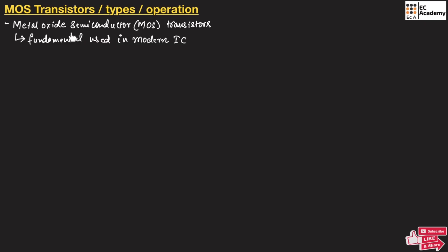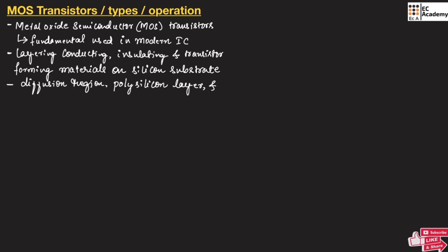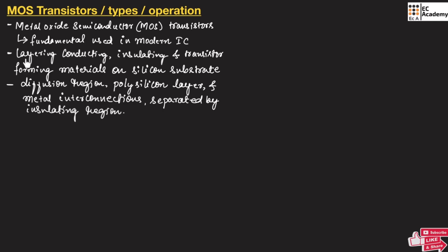Metal Oxide Semiconductor transistors are fundamental semiconductor devices used in modern integrated circuits. They are formed by layering conducting, insulating, and transistor-forming materials on a silicon substrate.